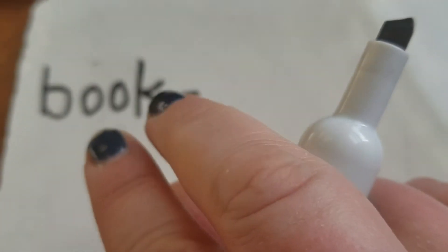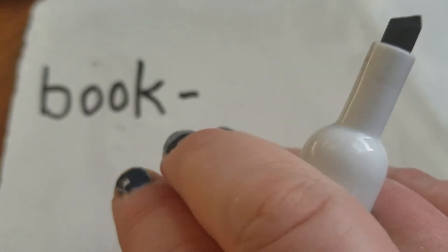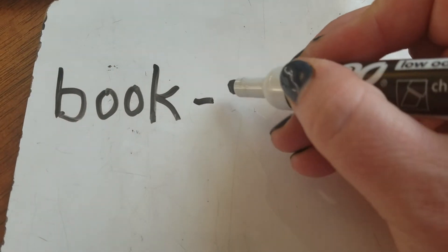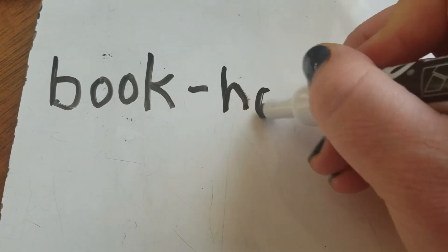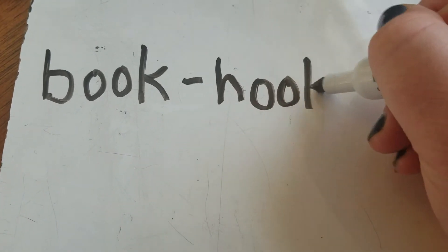Now we're going to turn book into hook. Think about what letter we would need to change for hook — huh, uh, kuh — hook. That's right, we change the first letter, the first sound: huh, uh, kuh.